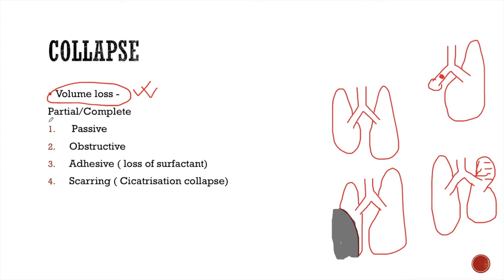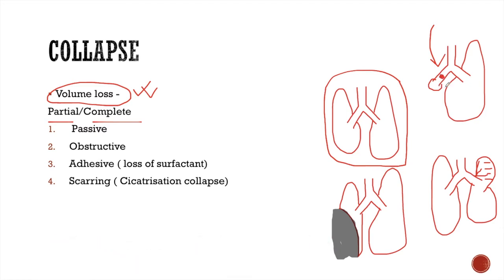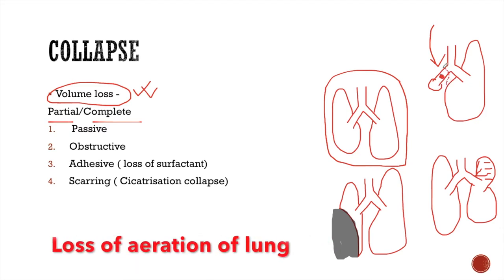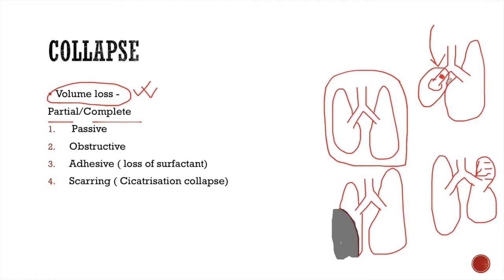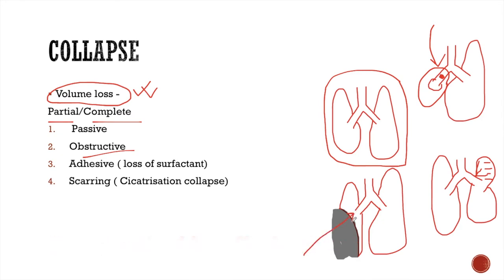Lung collapse can be partial collapse or complete collapse. This is the representation of a normal lung. Volume loss of a lung may occur when there is obstruction of the bronchus and loss of aeration of the lung — this is called obstructive collapse. Volume loss may also occur when the lung is pushed by an effusion or a pleural mass. This is a passive collapse.